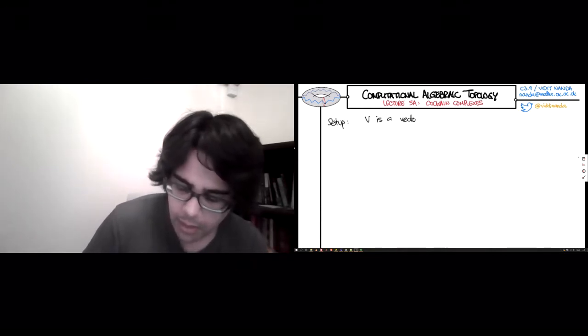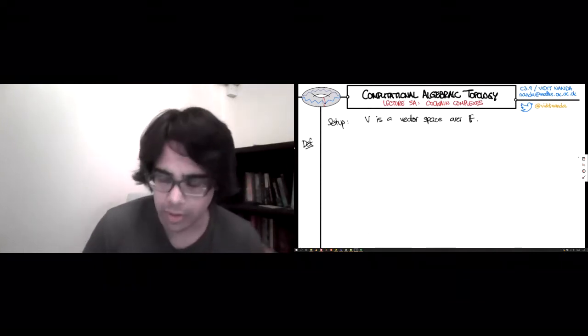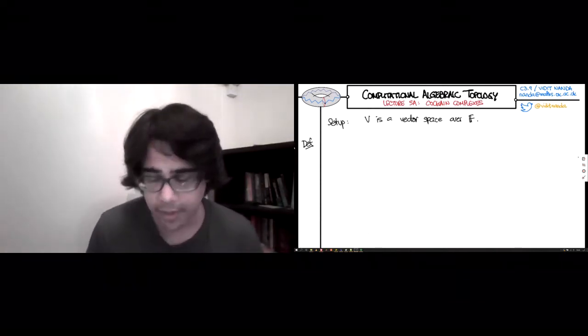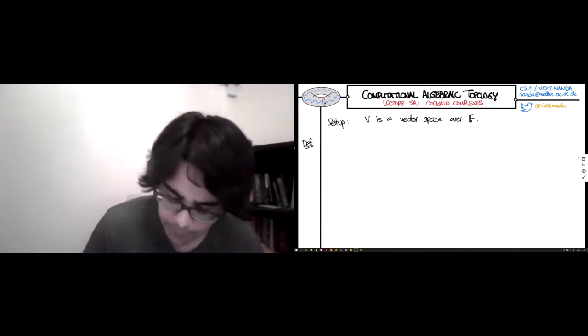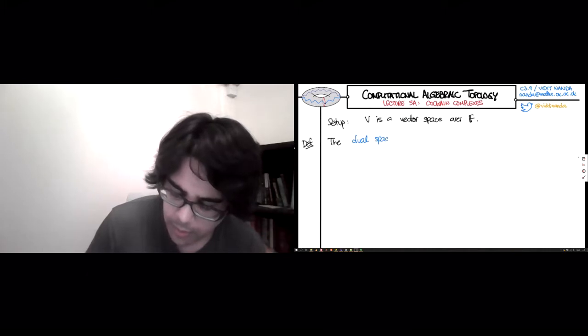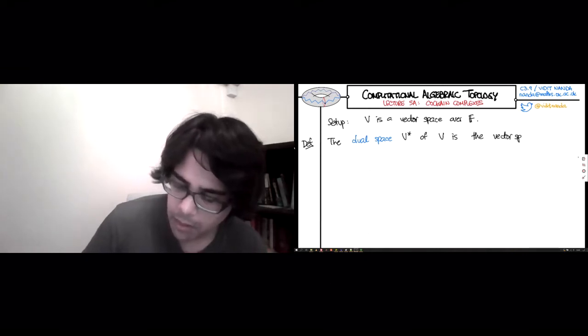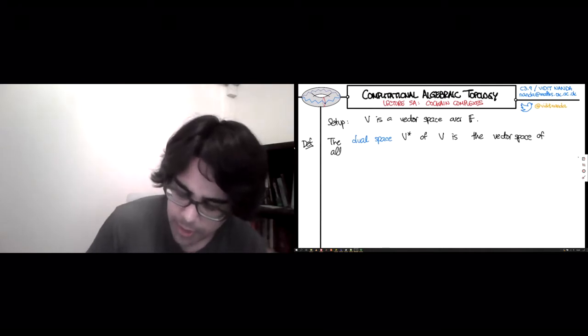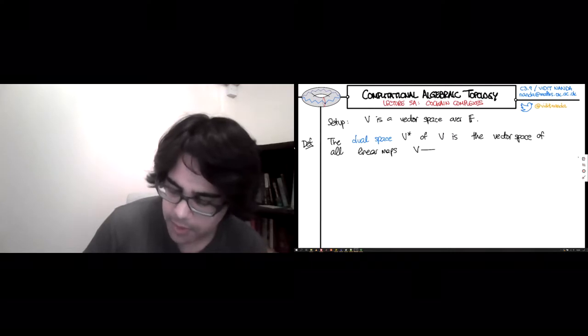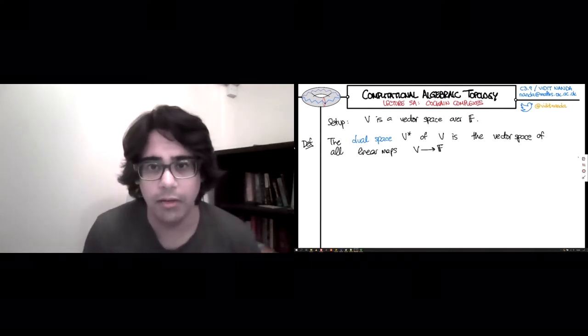Let's start with seeing what the source of this duality is. The setup is that V is a vector space over a field F, and the dual notion is that of the dual vector space. The dual space, which we'll call V star of V, is the vector space of all linear maps that start from our vector space V and end up in the coefficient field F.